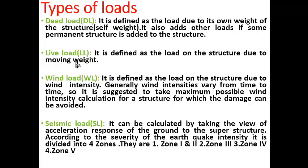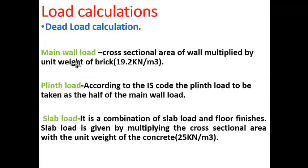My plan comes under zone 2. Load calculations. Initially, dead load calculation. It comprises of main wall load, plinth load, and slab load. Main wall load is calculated by multiplying the cross-sectional area of the wall by unit weight of the brick. According to the IS code, the plinth load can be taken as half of the main wall load. Slab load is a combination of slab self-weight and floor finishes, taken by multiplying the cross-sectional area with the unit weight of concrete — that is 25 kN per meter cube.